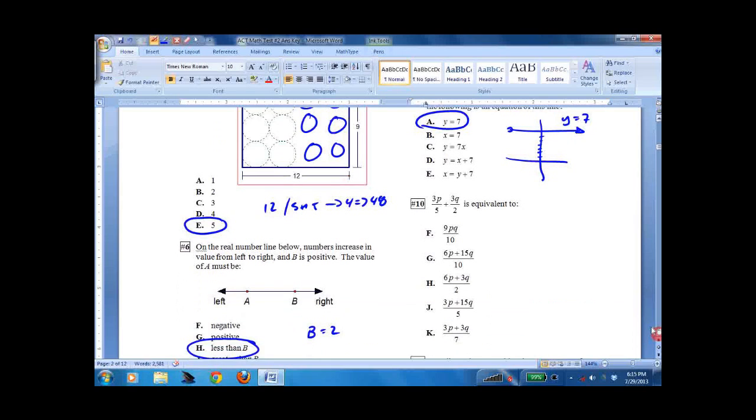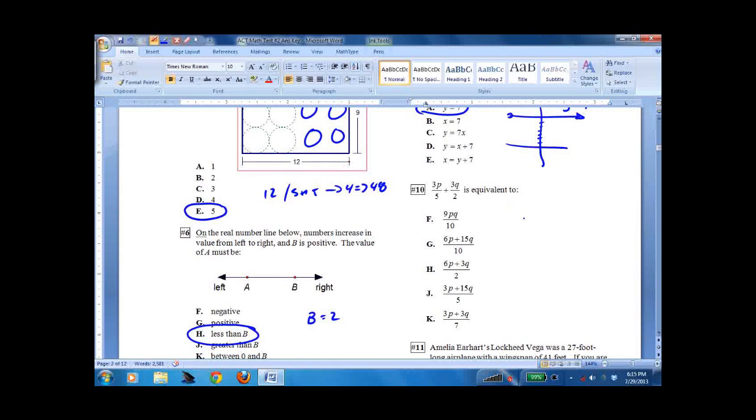Number 10, 3p over 5 plus 3q over 2. Fractions. The common denominator is going to be 10. Multiply top and bottom by 5. 6p plus 15q all over 10. That's G right there.